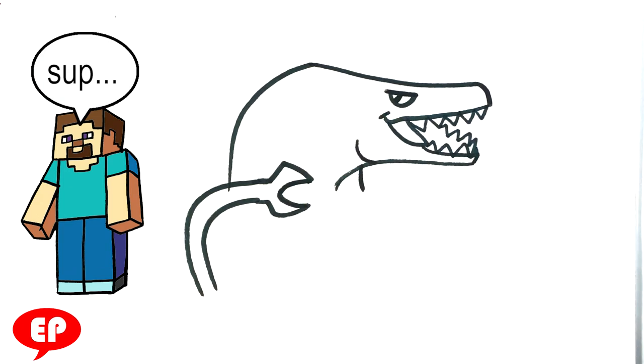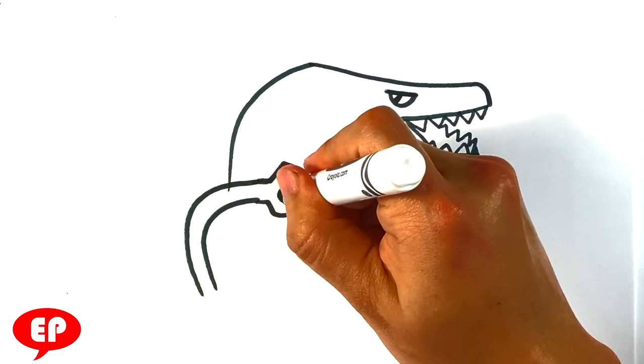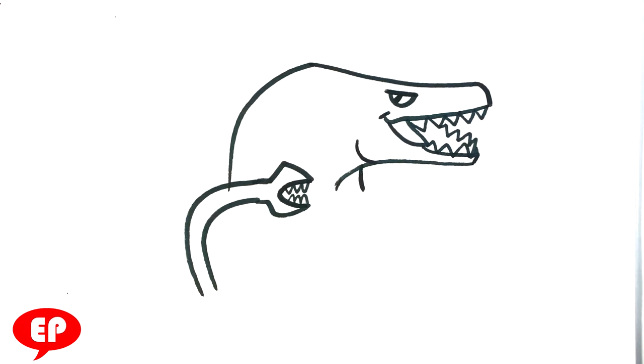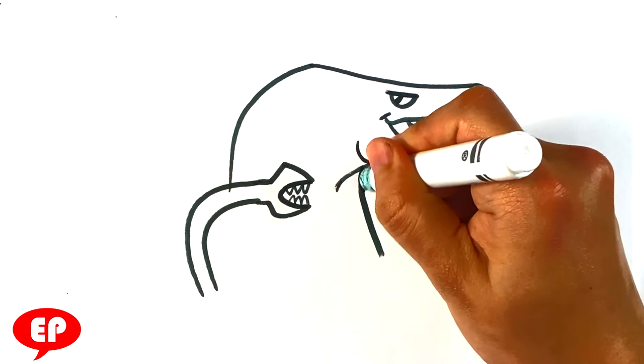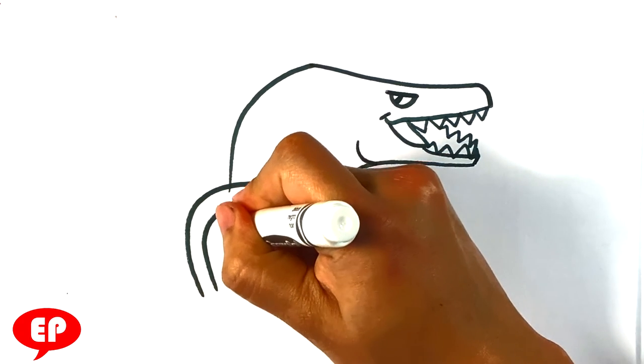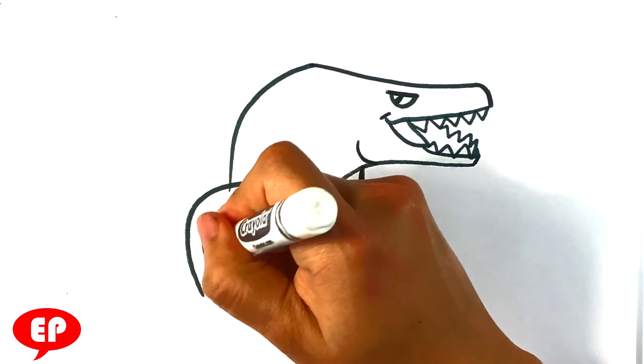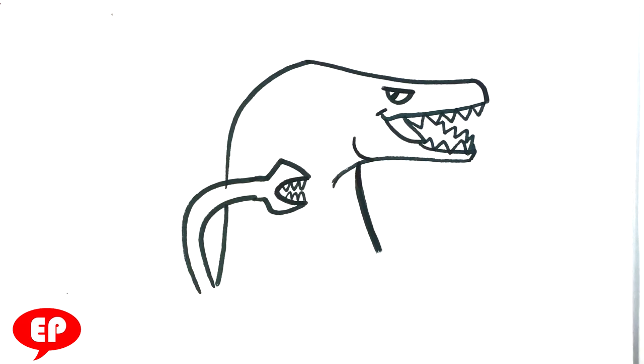Curve here. And I'm gonna do zigzaggy teeth here. Zigzaggy teeth here. Line down. Line down. Right there. I just dropped my marker. All right.